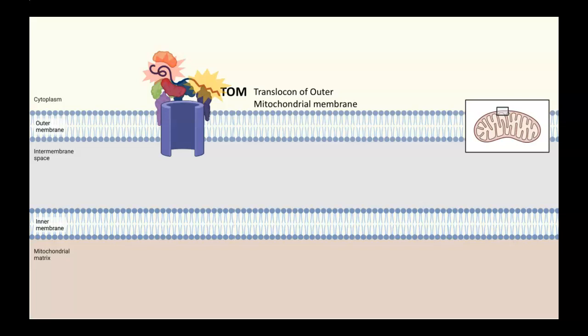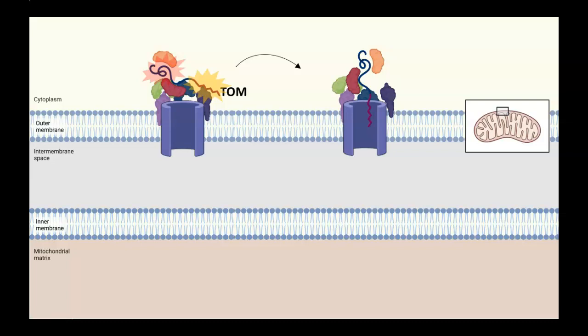Together, these interactions will facilitate an exchange. What will happen is that the TOM complex will be able to reorient the protein and begin by inserting that pre-sequence into the translocon. What happens next depends on which compartment within the mitochondrion the protein is destined for.